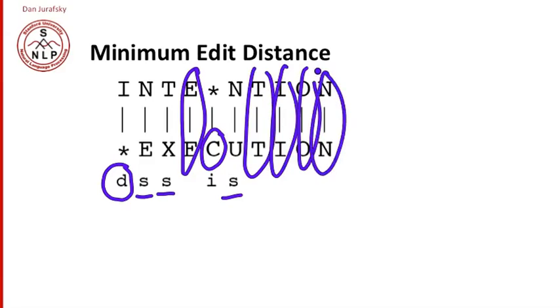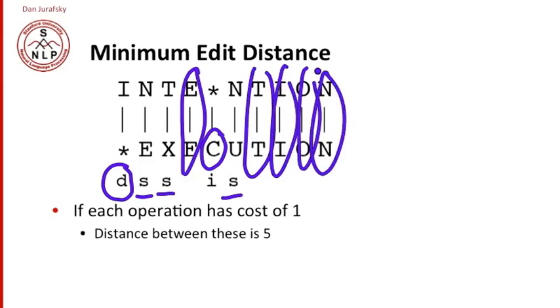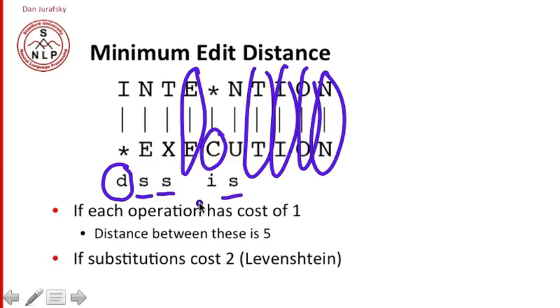So the edit distance, if each operation is one, is five. There's five, we had to do five things to turn intention into execution. If substitutions cost two, this is called Levenshtein distance. In Levenshtein distance, insertions and deletions cost one, but substitutions cost two, and now the distance between these two strings is eight.